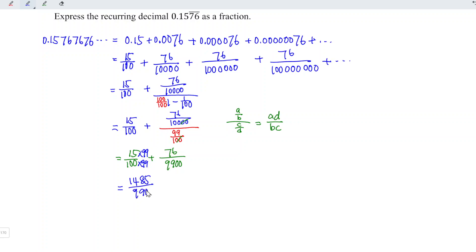We add the second term, 76 over 9,900. Finally, we obtain the value: 1,485 plus 76 equals 1,561 divided by 9,900.